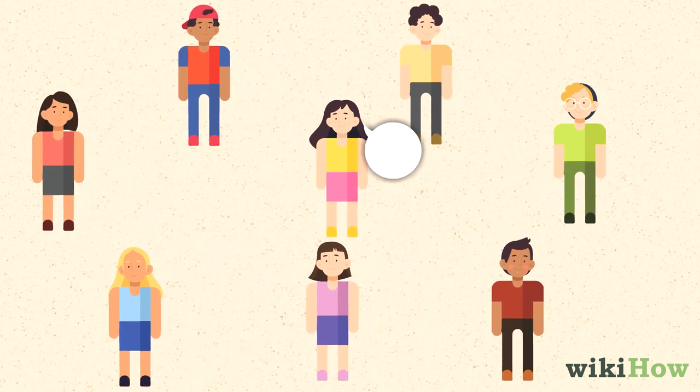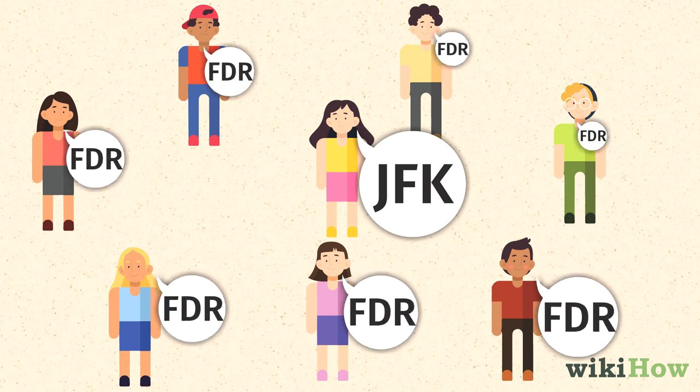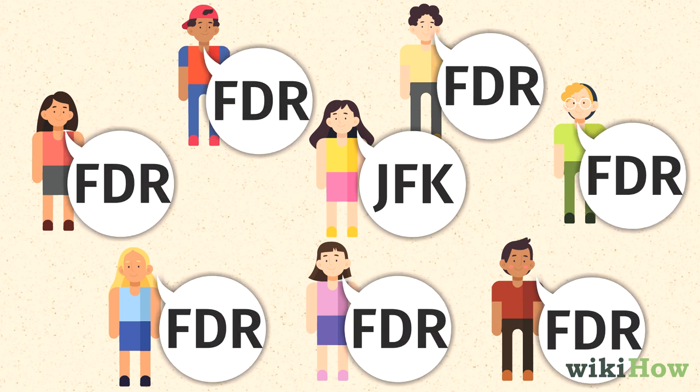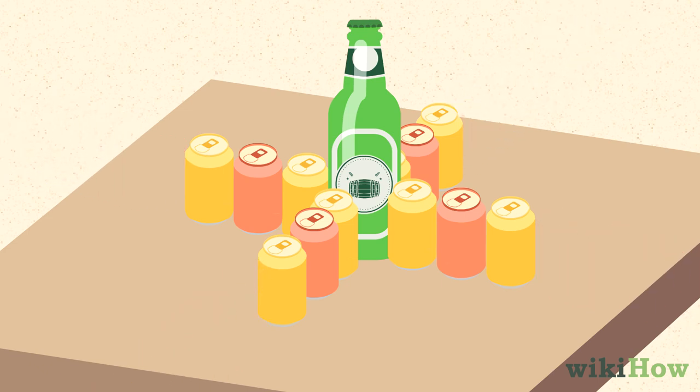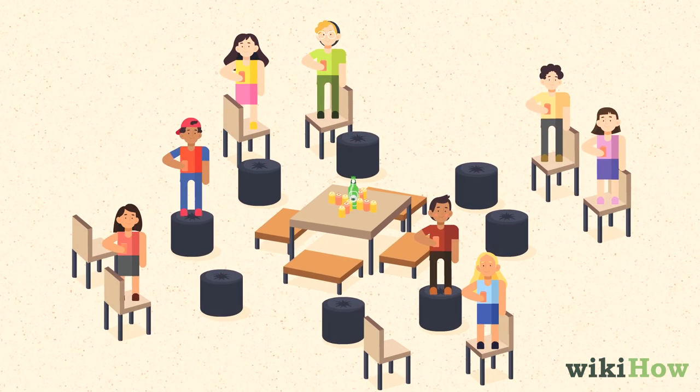The first player yells 1-2-3-JFK. Then everyone else yells FDR. All of the players grab a pawn from the castle and run to a random space in one of the four zones.